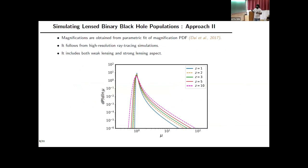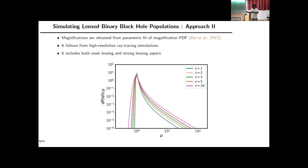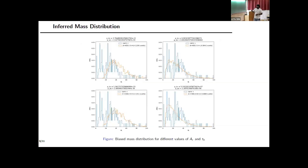We also take a second approach, drawing magnifications from high-resolution ray-tracing simulations rather than calculating them from the impact parameter alone. Some groups have performed high-resolution ray-tracing simulations over cosmological scales and provided magnification distribution data fitted with parametric formulas. We use those formulas to assign magnifications for different redshifts to 1 million lighter black holes (log-normal, 10–20 solar mass) distributed at cosmological scales, then examine how their apparent masses change.